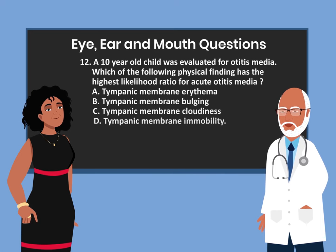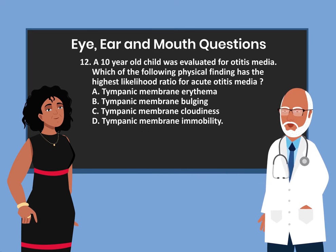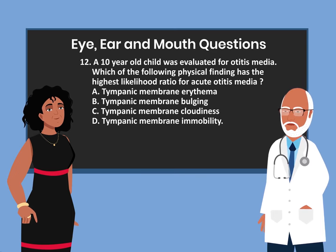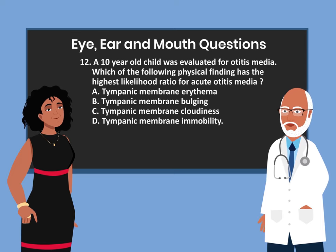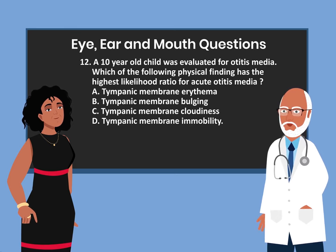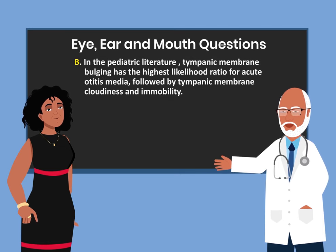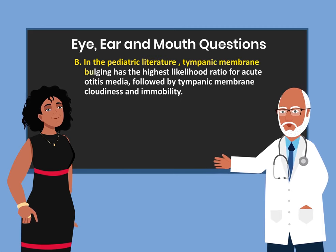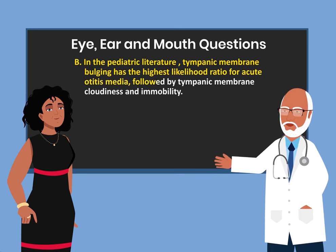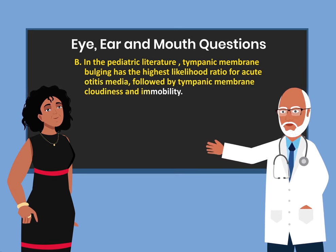Question 12. A 10-year-old child was evaluated for otitis media. Which of the following physical findings has the highest likelihood ratio for acute otitis media? A. Tympanic membrane erythema. B. Tympanic membrane bulging. C. Tympanic membrane cloudiness. D. Tympanic membrane immobility. The answer is B. In the pediatric literature, tympanic membrane bulging has the highest likelihood ratio for acute otitis media, followed by tympanic membrane cloudiness and immobility.